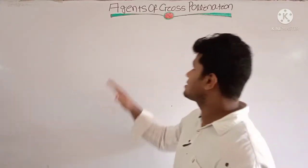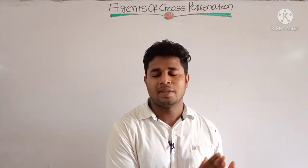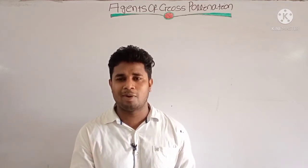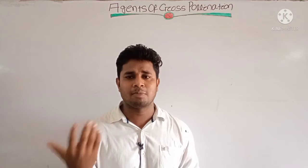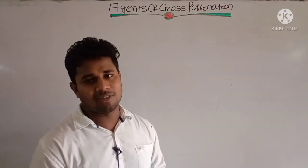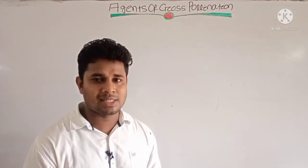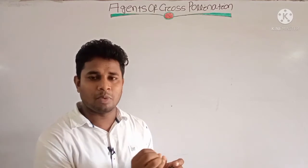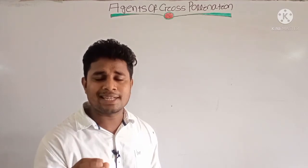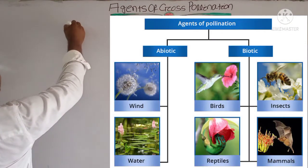In today's class, we will learn in detail about the different types of agents involved in the process of cross-pollination — how these agents transfer pollen grains from one place to another, and what the characteristics of these pollinating agents are. Today's topic is agents of cross-pollination. Agents may be your biotic agents or your abiotic agents. There is no requirement of agents in self-pollination; agents are only required in cross-pollination.